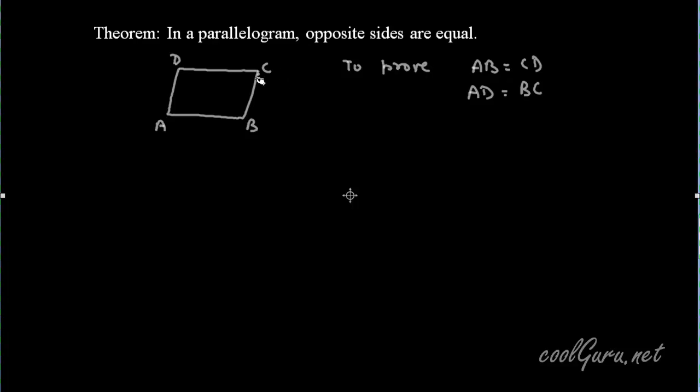For this, first we will join AC so that we get two triangles and we will prove that these two triangles are congruent: triangle ADC and triangle CBA.